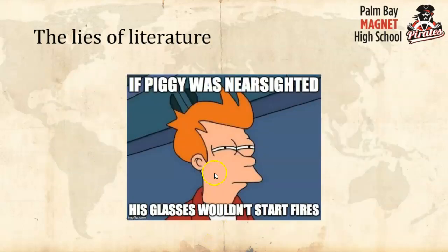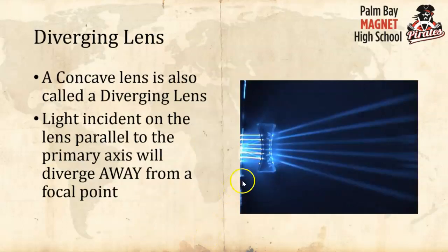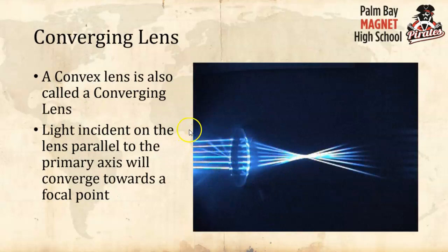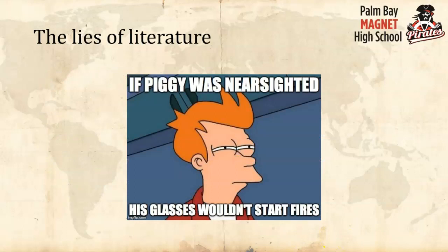In Lord of the Flies, the character Piggy — they stole his glasses to make fire, but it didn't make sense because Piggy was nearsighted. His glasses would have been diverging lenses, terrible at starting a fire. Someone with reading glasses or a magnifying glass — a converging lens — can focus the sun's rays to a tiny hot point and start a fire, just like a mirror.